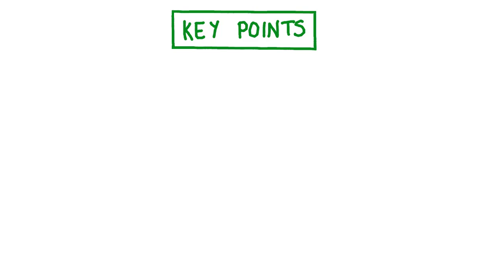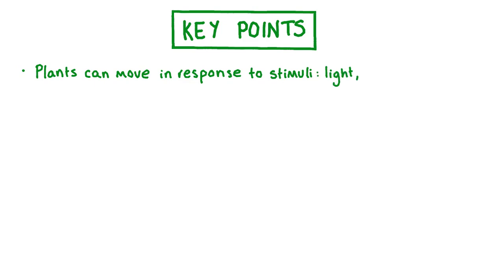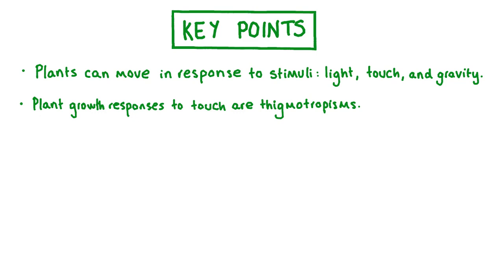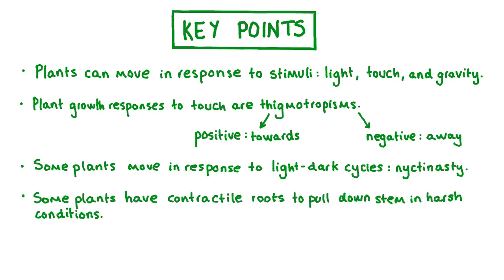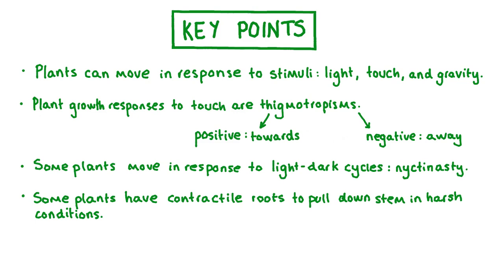Let's review some of the key points covered in this video. Plants can move in response to a range of stimuli such as light, touch, and gravity. A plant's growth movement in response to a touch stimulus is called thigmatropism — positive thigmatropism is movement towards a stimulus, and negative thigmatropism is movement away. Some plants like legumes can move in response to light-dark cycles in a process called nyctinasty or sleep movement. Plants like corms, bulbs, and rosettes have contractile roots that shrink and pull the stem deeper into the soil under harsh conditions. Finally, within plant cells, the cytoplasm is in constant rotational motion in a process called cytoplasmic streaming.